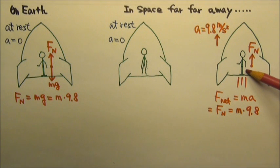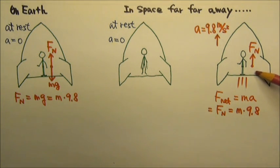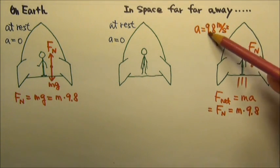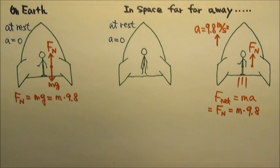If I draw the force diagram of the person, there would not be any mg because he is far away from all planets and stars. But he is touching the floor, so the floor gives him this normal force. If I write the net force equals ma, the net force would just be the normal force, which equals his mass times the acceleration 9.8.